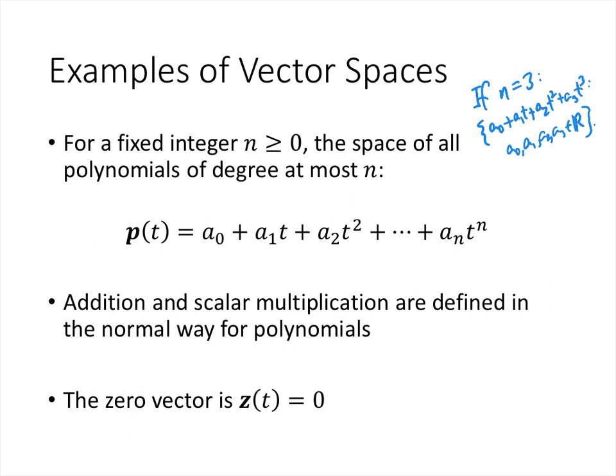Now we have to explain what the two operations are, addition and scalar multiplication, and one of the things that we typically point out when we look at these examples is what's the zero vector. So how do we add two polynomials? Well, we just add them like we normally do in algebra. How do we multiply a polynomial by a scalar? Again, we just do the normal thing that we would do in algebra. And then the zero vector here would just be the zero polynomial, which we might call z of t, and that's just equal to zero.